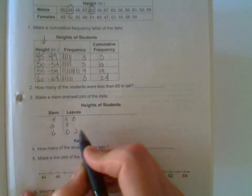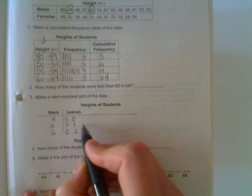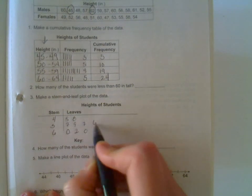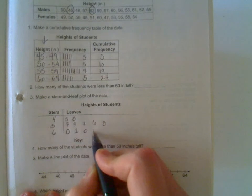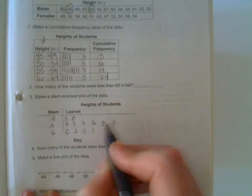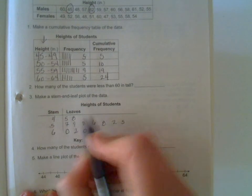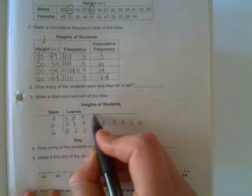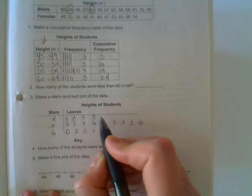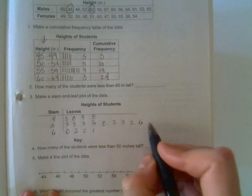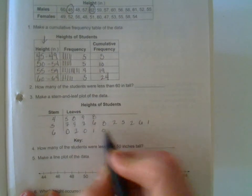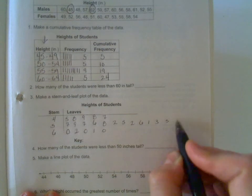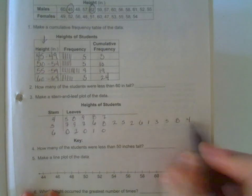So you've got 48, 57, 62, 59, 57, 60, 56, 58, 61, 52, 55, 49, 52, 56, 48, 51, 60, 47, 53, 55, 58, and 54.